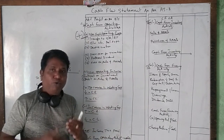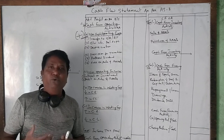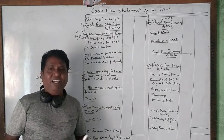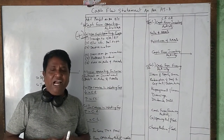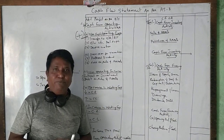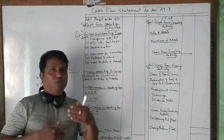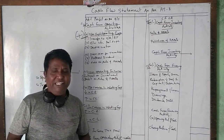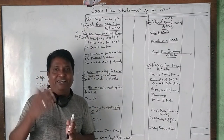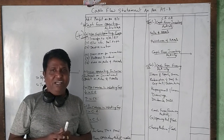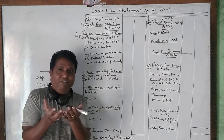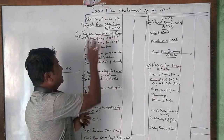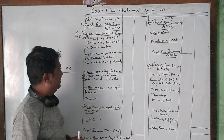Proposed dividend is also a non-cash item. The company earns profits every year, and the directors declare dividends in the general body meeting. However, dividends are not paid immediately — the company has a period of time to disburse them. Till the payment of dividend, that money remains with the company itself. Therefore, proposed dividend is also considered a non-cash expense and is added back.